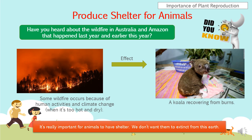So what is the effect of the wildfire? I want you to look at the right side of this slide — that is a picture of a koala recovering from burns. Koalas are very cute, right? When you look at this picture, it looks very sad because their house is burned. This is a picture of a koala that was rescued and is recovering from burns. Children, do you know now that it is really important for animals to have shelter? We don't want them to go extinct from this earth — we don't want these animals to exist now but be gone in the future.